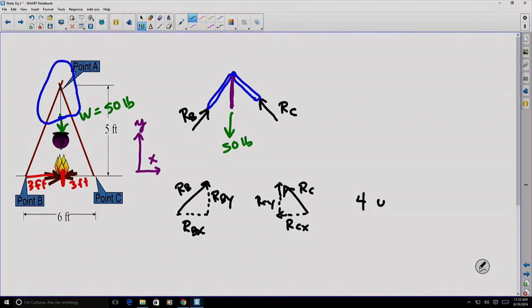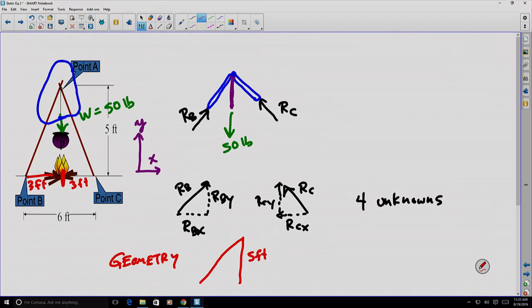Notice now that we've broken this up into components, we essentially have four unknowns: RBx, RBy, RCx, and RCy. We have one known load. However, we can apply some geometry. We recognize that the triangle that RB is part of has a geometry associated with it. The height of that triangle is 5 feet, and the base is 3 feet.